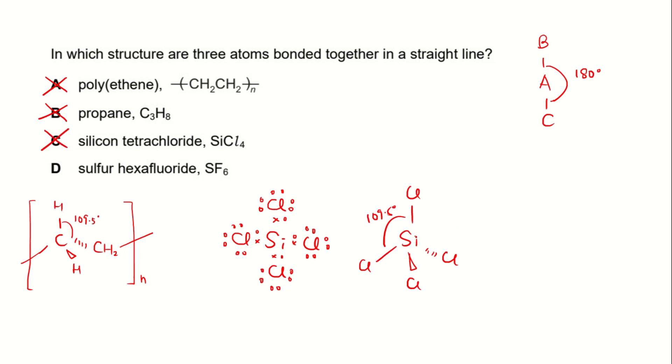D, sulfur hexafluoride. Sulfur is bonded to six fluorine atoms. It has an octahedral shape. So the bond angles of fluorine-sulfur-fluorine is 180 degrees, although some of them are 90. But we do have three atoms bonded together in a straight line with the bond angle of 180 degrees.